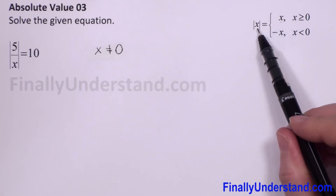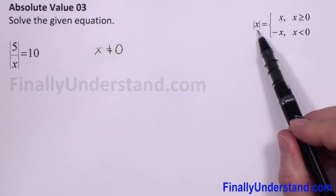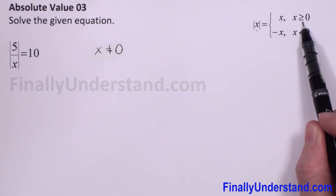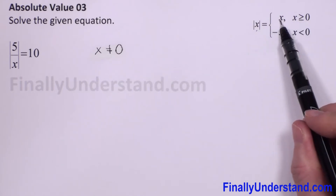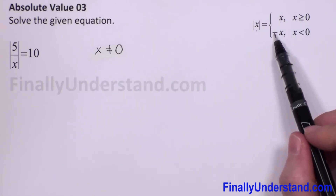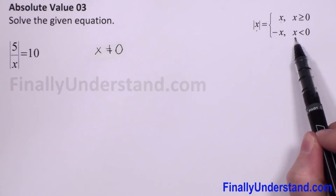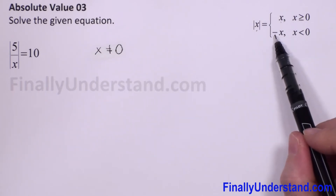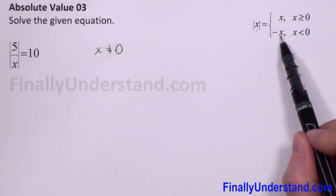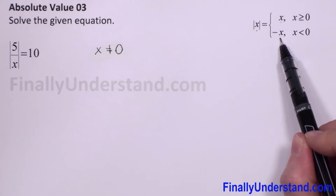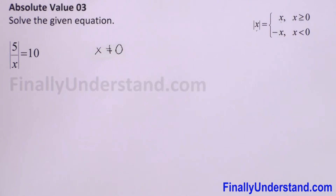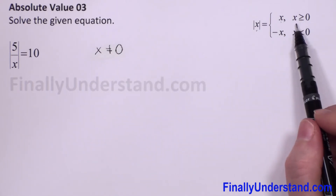The first case is when the number between the absolute value bars is positive or zero — we just copy this number. The second case is when the number between the absolute value bars is negative — we have to put a negative sign before this number. So, what we have to do first? We have to find the domain for the first case.